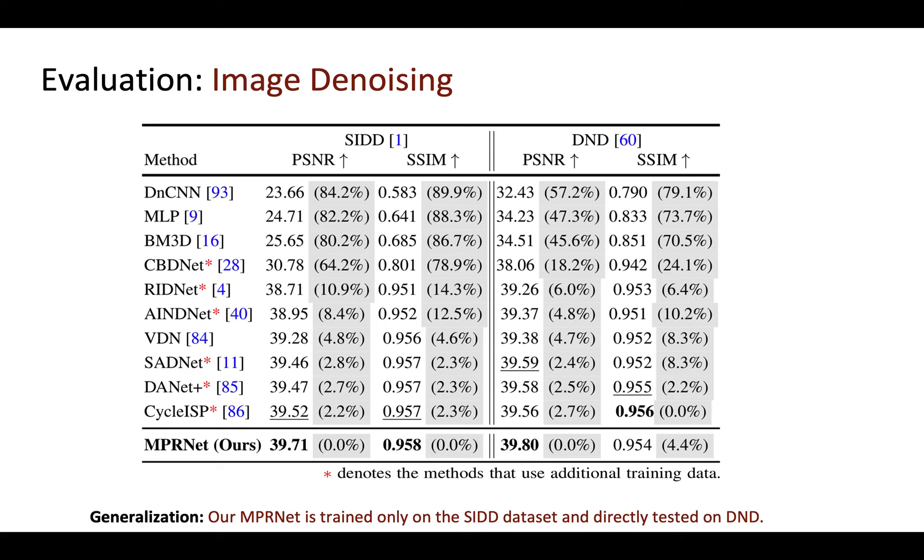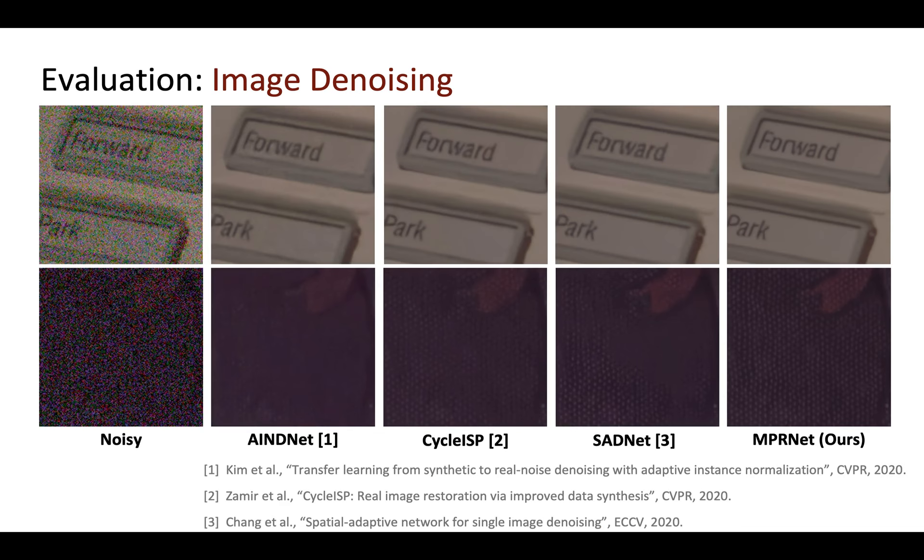Finally, we compare results for image denoising. This table shows that our approach obtains considerable gains over previous algorithms without using any extra training data. Here are some denoising examples. Our method removes noise while preserving image structure and fine textures.